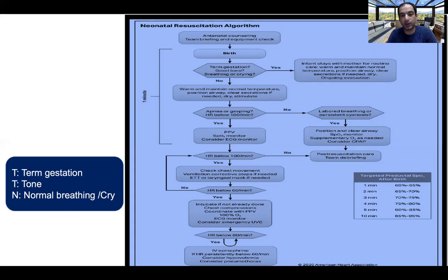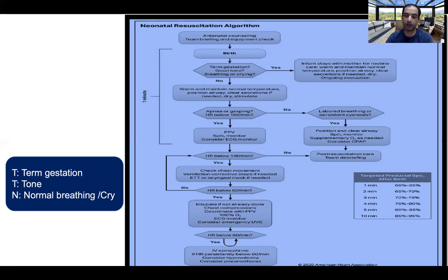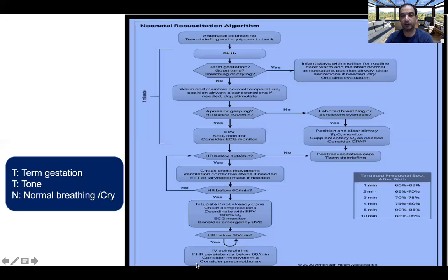At the resuscitation corner, the baby must be positioned properly, the airway cleared of secretions, and the baby dried and stimulated. If the neonate continues to have apnea, gasping respiration, or a heart rate below 100 per minute, positive pressure ventilation should be started along with attachment of a pulse oximeter. If the heart rate remains below 100, corrective steps should be taken and endotracheal intubation considered. If despite 30 seconds of effective PPV the heart rate remains below 60 per minute, chest compressions must be started, oxygen increased to 100 percent, umbilical lines considered, and ECG attached for accurate heart rate estimation. If the heart rate remains below 60, IV epinephrine should be considered.